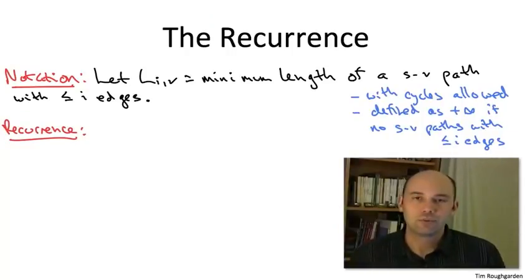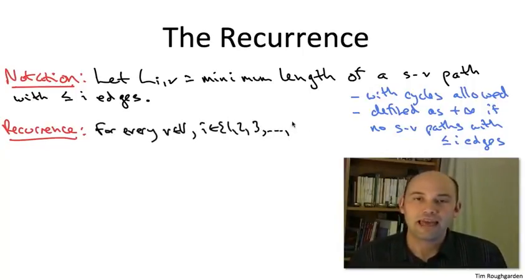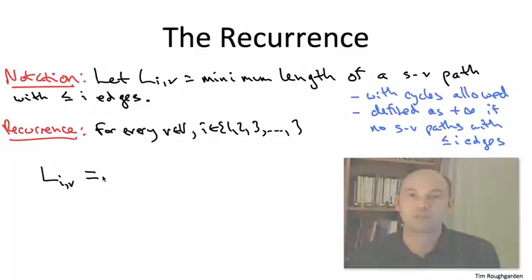As usual, in the recurrence, which is going to be defined for every positive integer I and every possible destination V, we're just going to state that the optimal solution value for the subproblem is the best of the possible candidates identified in the optimal substructure lemma.